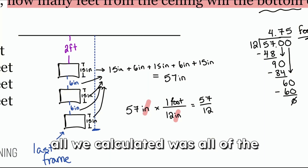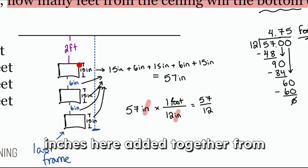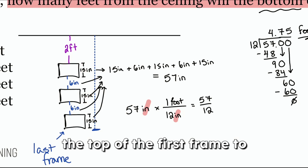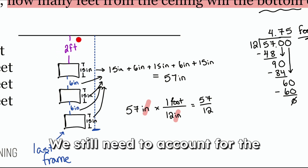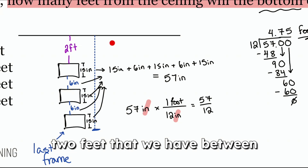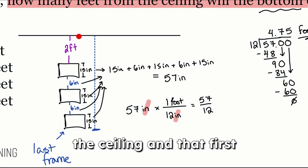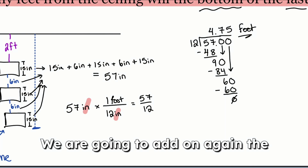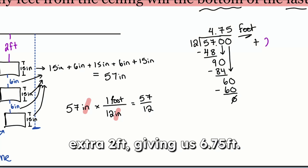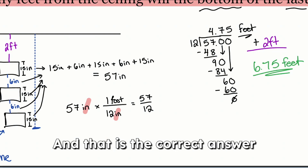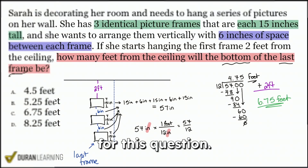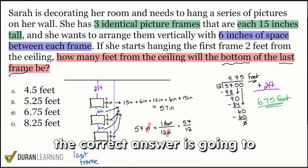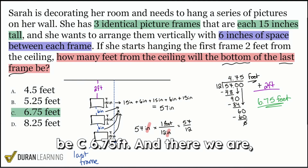Remember, all we calculated was the inches from the top of the first frame to the bottom of the last frame. We still need to account for the 2 feet between the ceiling and that first frame. So we have 4.75 feet and we add on the extra 2 feet, giving us 6.75 feet. That is the correct answer — answer choice C, 6.75 feet.